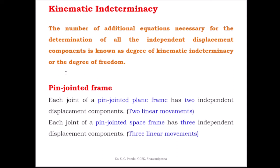Coming to pin-jointed frames. There are two types: pin-jointed plane frame and pin-jointed space frame. The space frame is also known as 3D truss or space truss. In the case of a pin-jointed plane frame, at each joint there are two independent displacement components — two linear movements take place. But in the case of a pin-jointed space frame, at each joint there are three independent displacement components — three linear movements in three orthogonal directions.